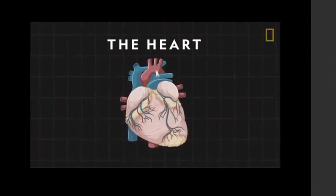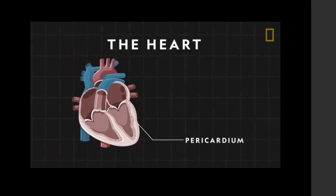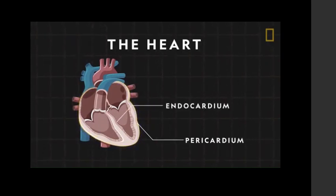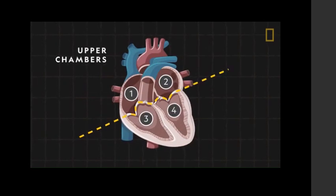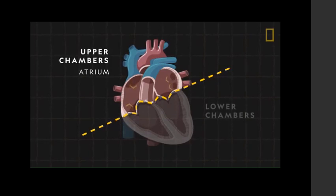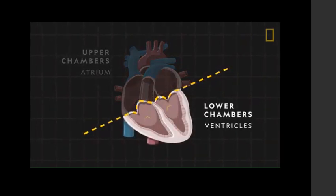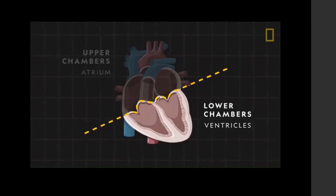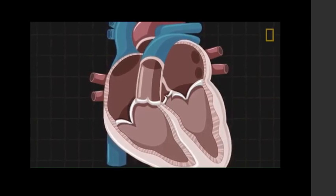The heart is an organ made up of several tough layers of muscle. The pericardium is the thin layer that covers the exterior, while the endocardium lines the inside walls. The heart is divided into four chambers — two upper and two lower. The upper chambers, known as the atria, receive blood coming into the heart, while the lower chambers, the ventricles, pump blood out. Between each chamber are valves that open and close to keep the blood moving.